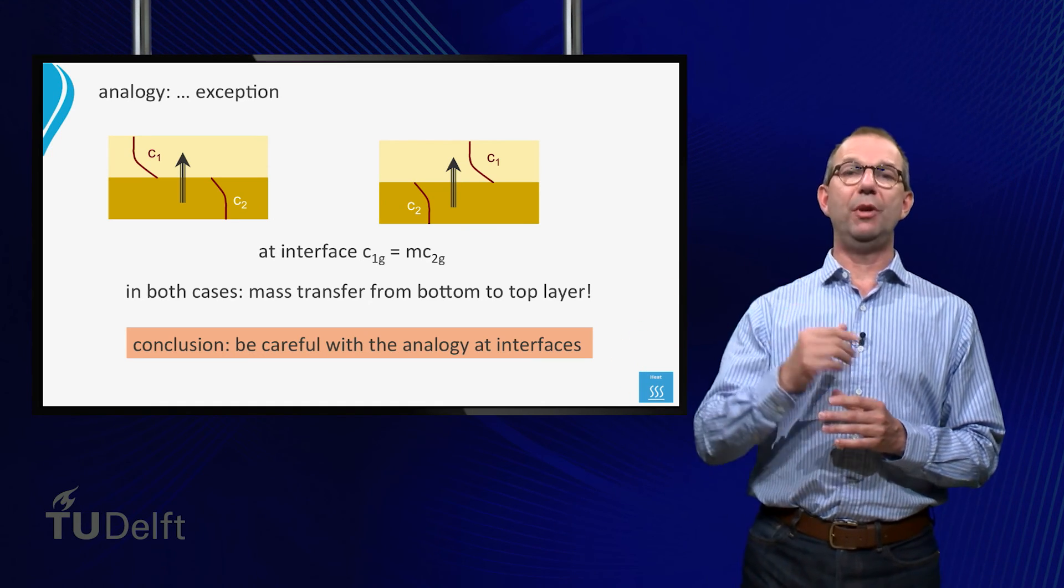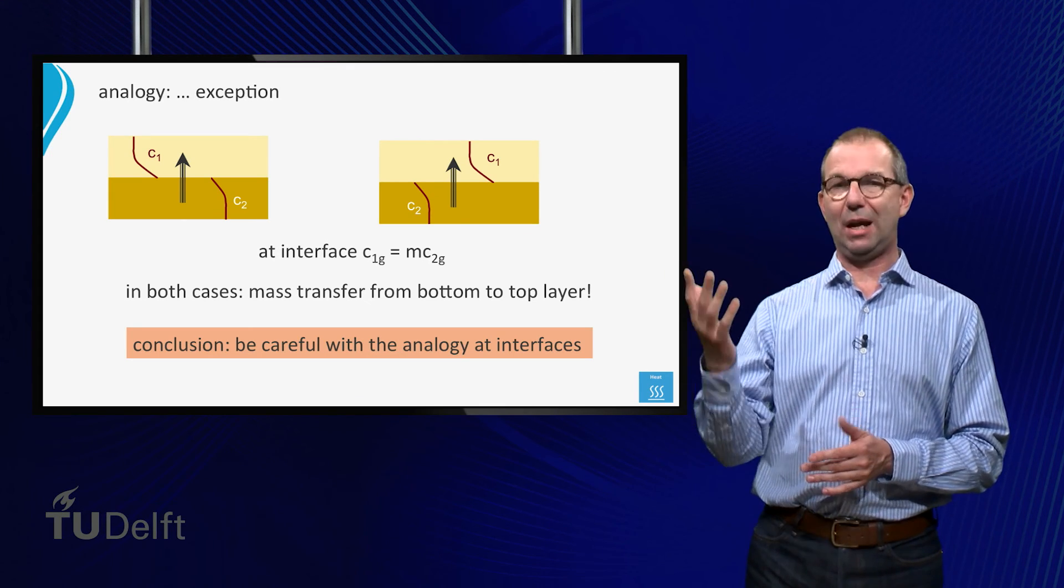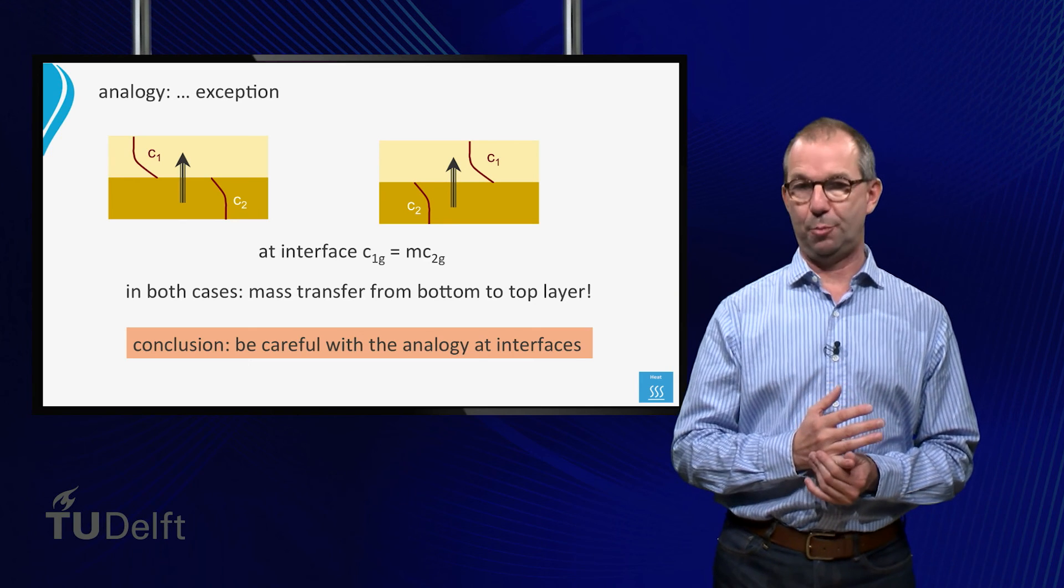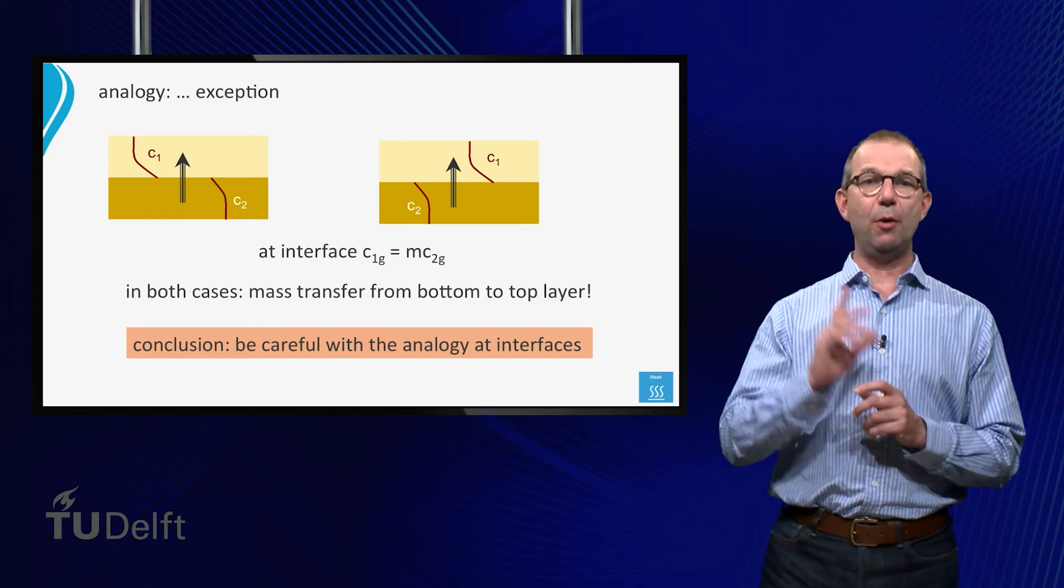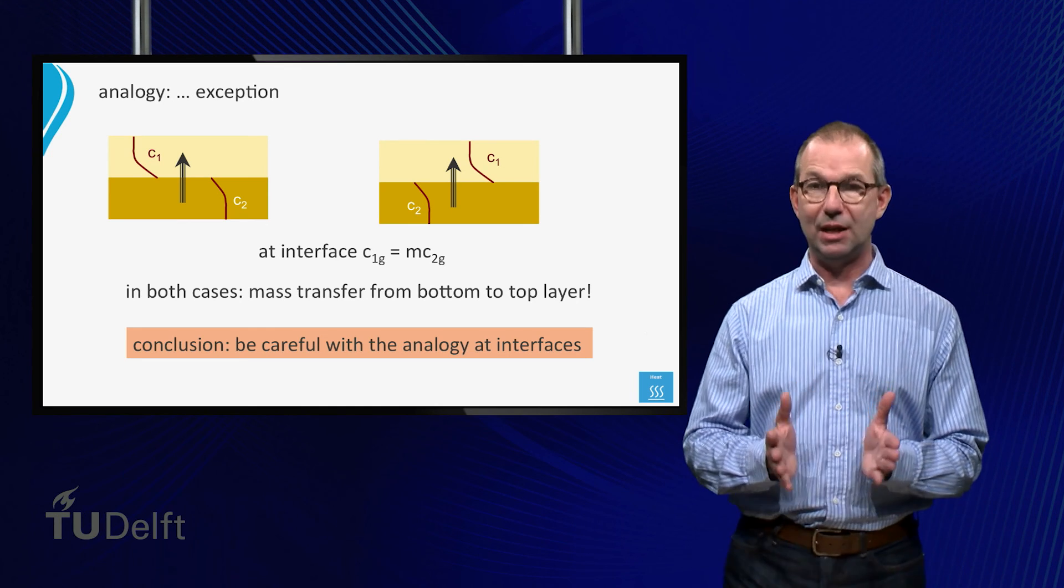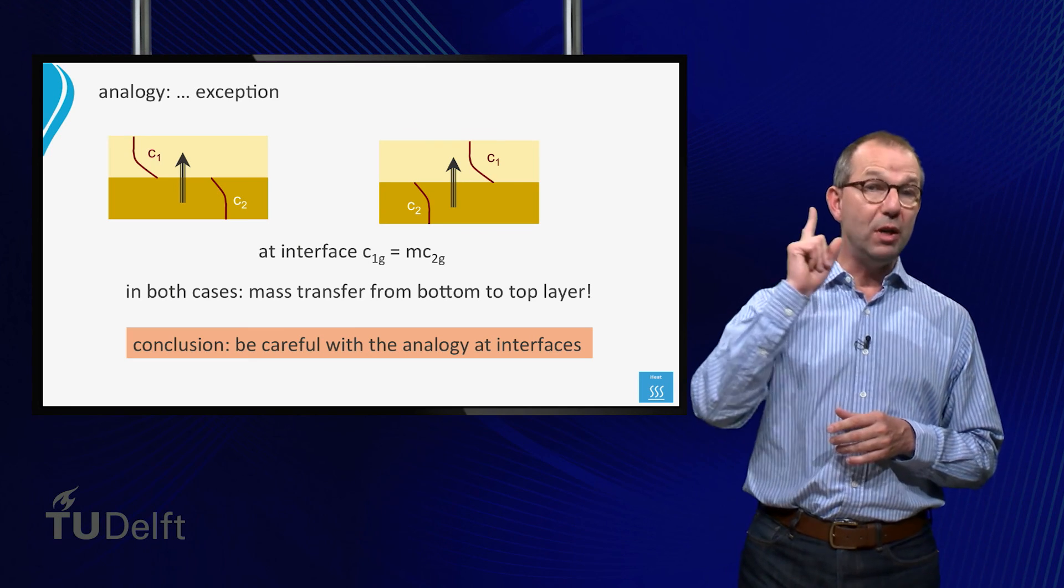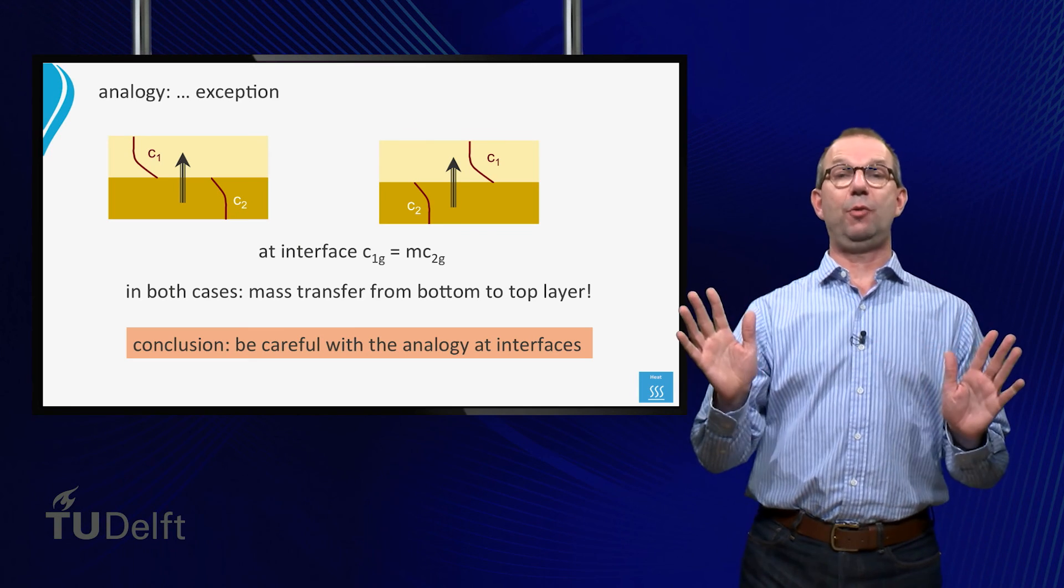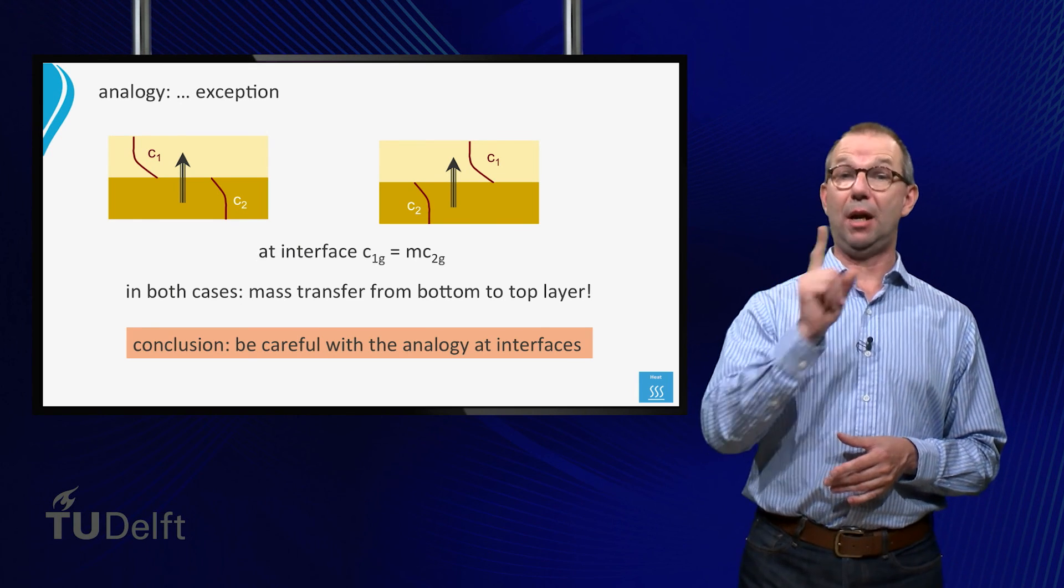How to deal with this is outside the scope of our present series of lectures. For that, you need to check out the advanced course on transport phenomena. For now, it is sufficient to be aware of the limitations of the analogy. As long as you have mass transfer in only one layer, nothing strange happens. As soon as the mass transfer crosses an interface, be careful.